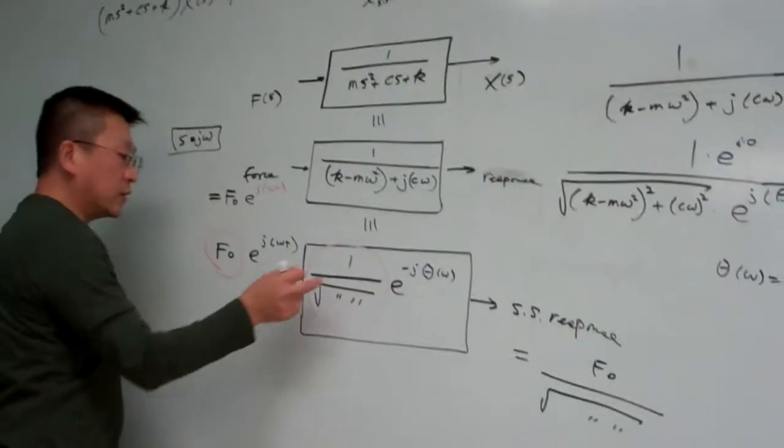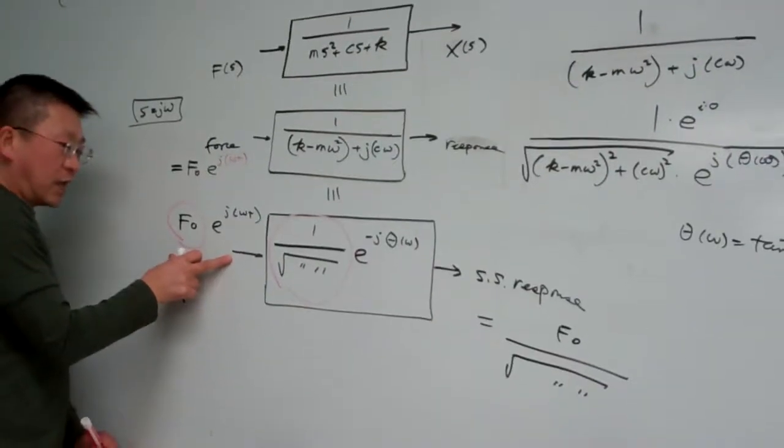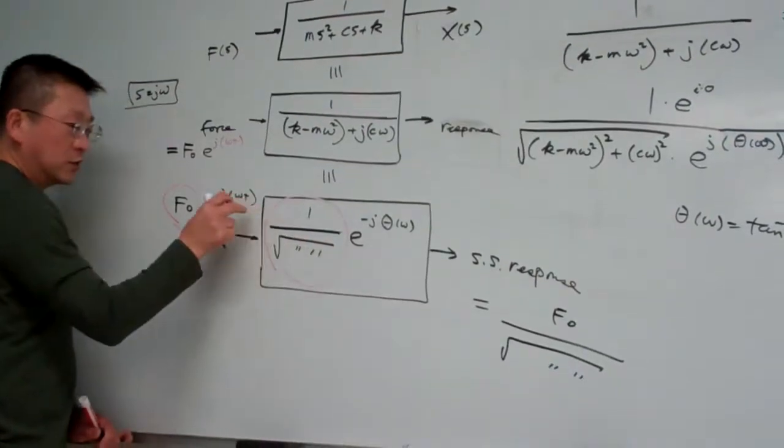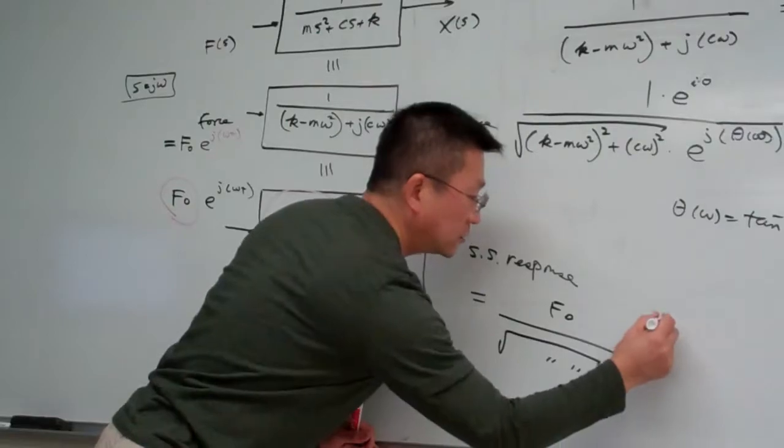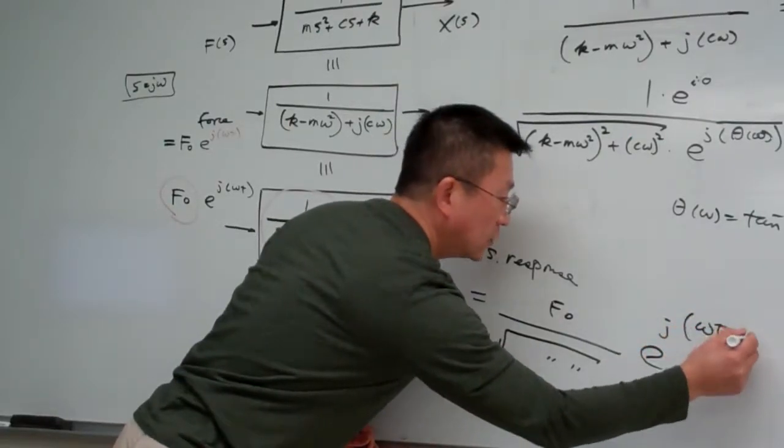So that is e to the j omega t minus theta. If you compare this result with this one, basically you can see the magnitude equal to that one, the phase angle simply equal to what we have here.